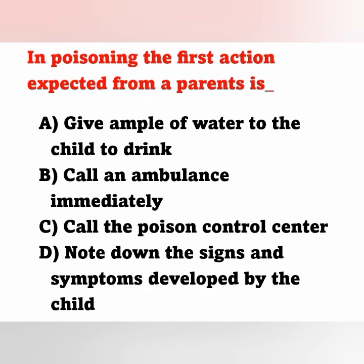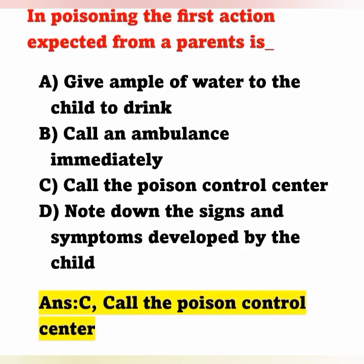Next question: In poisoning, the first action expected from parents is — Option A: Give water to the child to drink, Option B: Call an ambulance immediately, Option C: Call the poison control center, Option D: Note down the signs and symptoms. The first action by the parents should be to call the poison control center immediately, before giving anything to the child, as they will provide directions on what to do next.